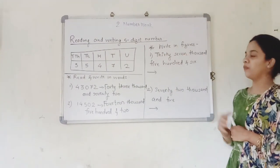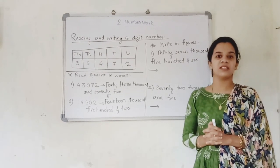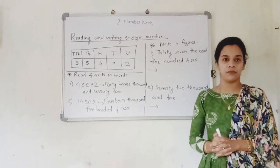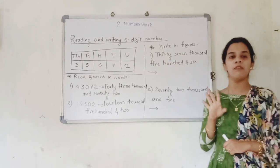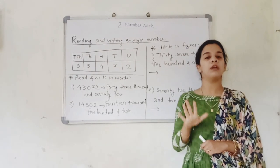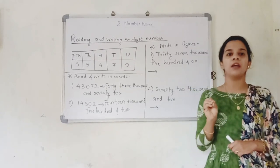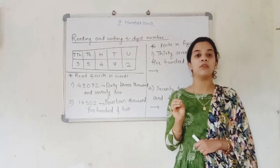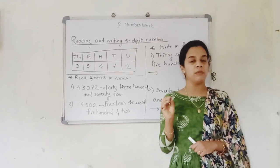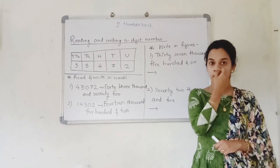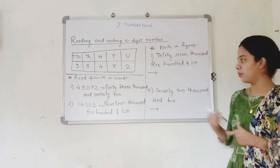The next part is: write in figures. They have given you something in words and we are supposed to write it in figures. So the number is 37,000. Can you tell me — will it be a 4-digit or a 5-digit number? I am not speaking about 7,000, I am speaking about 37,000. So this number will be a 5-digit number. Yes, it will be a 5-digit number.